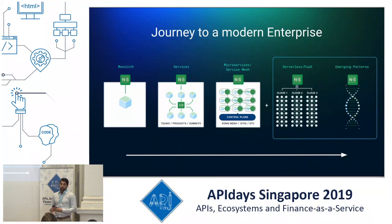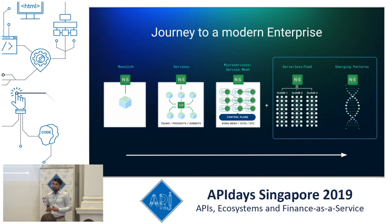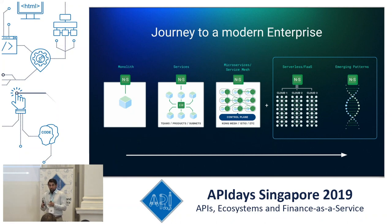It's a journey that goes from traditional legacy monolith to more and more decoupled systems. We want to enable different teams and different products to communicate with each other. We want to be able to scale them independently, to deploy and build them independently. The traditional API use case — APIs were very popular as north-south traffic — now evolves and changes.